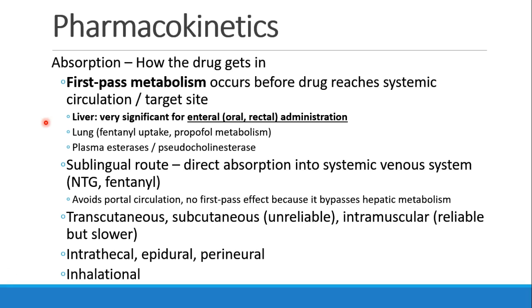First-pass metabolism is especially significant for enteral administration — oral or sometimes rectal. But technically, any time a drug is metabolized before it gets to its target, that's called first-pass metabolism. For example, fentanyl injected into a vein goes straight to the vena cava, through the heart, through the lungs, and then to the body — but some fentanyl is actually taken up and metabolized in the lung, so there's a first-pass effect there as well. Similarly, succinylcholine administered IV is metabolized in the blood itself by plasma esterases, which also represents a form of first-pass metabolism.